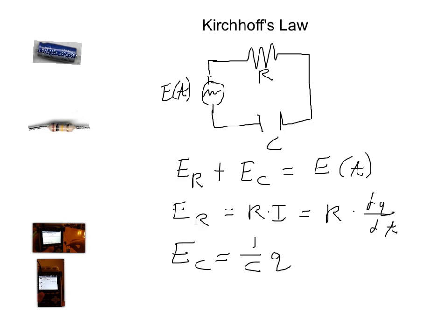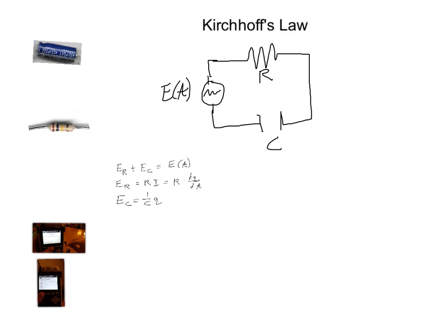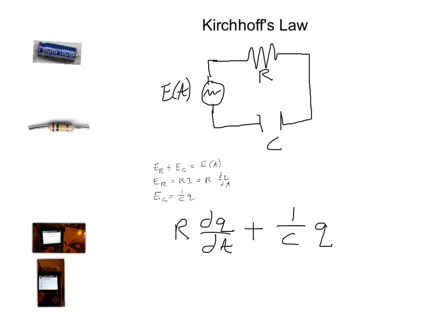What we see for our formula is the following: I'm going to have R times dQ/dt, this is from the resistor, plus 1 over C times Q is equal to E. This is a very important formula that I'm going to want to remember for a while, so I'll box this into red.